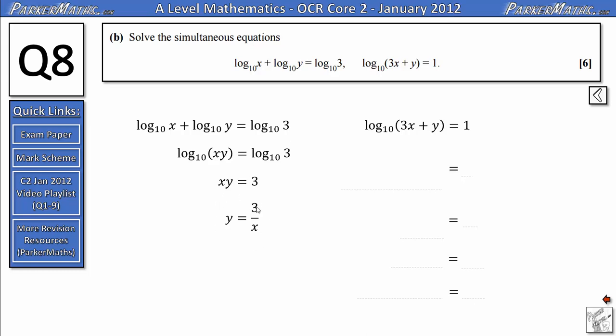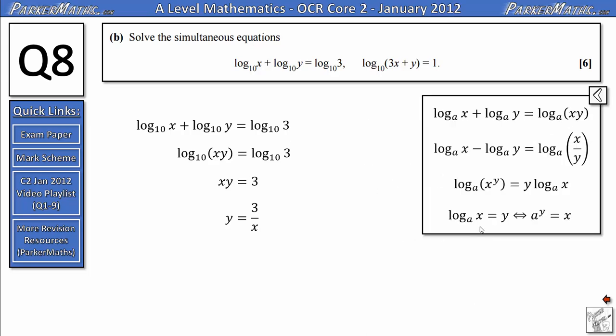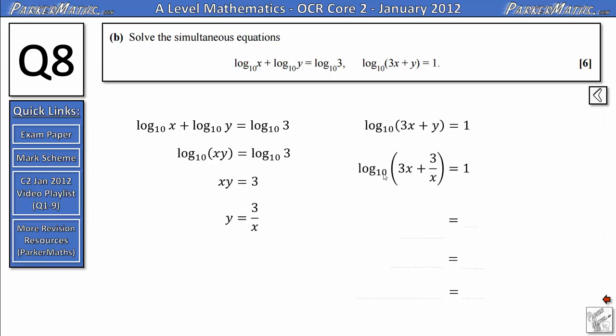From here I can now substitute this into the second equation. So we'll get log₁₀(3x + 3/x), because we're substituting in the 3/x here. From this point we're going to use another log law. This time we're going to rewrite the log as the equivalent exponential form. If I've got log_a(x) = y, I can rewrite that as a^y = x. Notice the base for the log is the same as the base in the exponential. So in ours, our base will become 10. So we can say 10^1 equals this bracket here. So 3x + 3/x = 10^1, which is just 10.